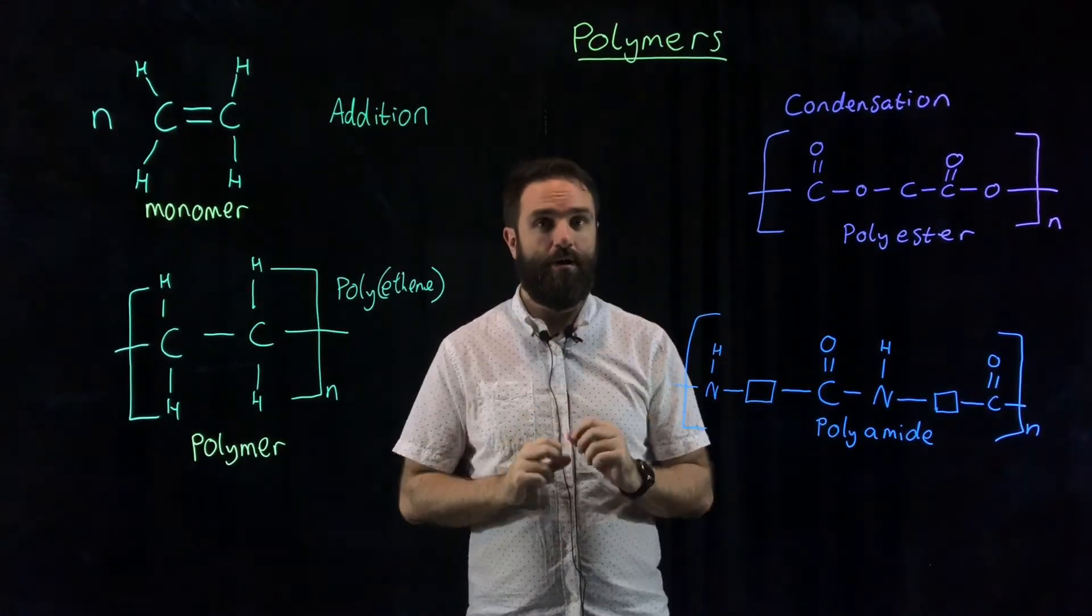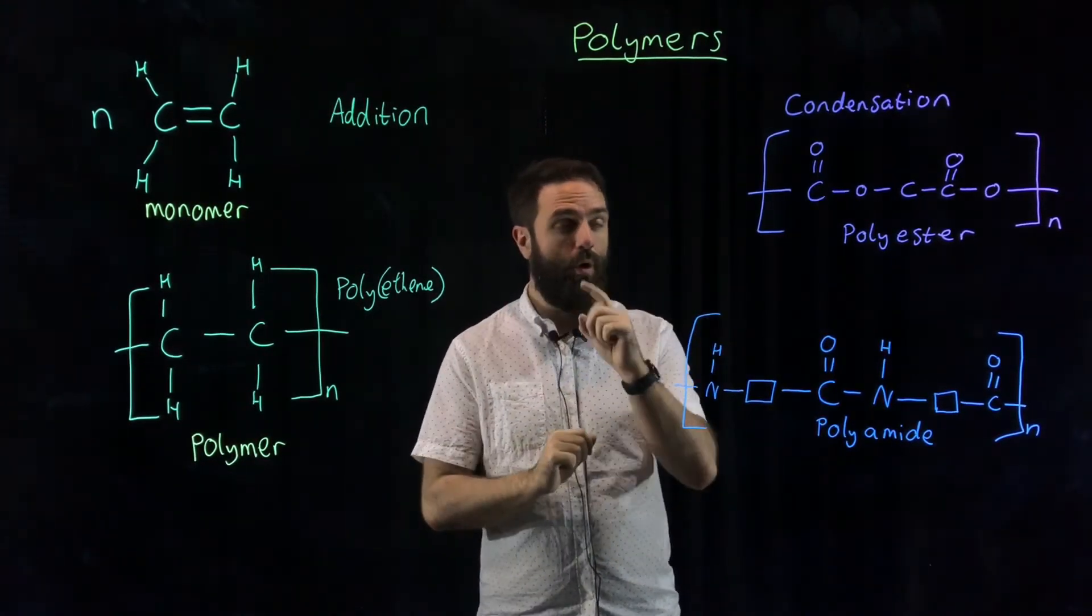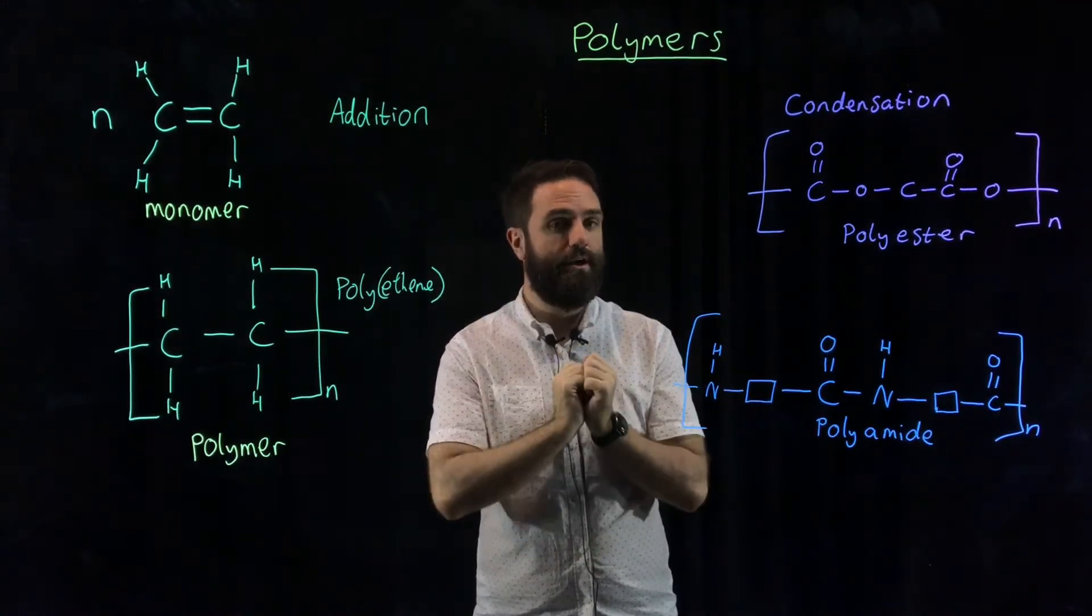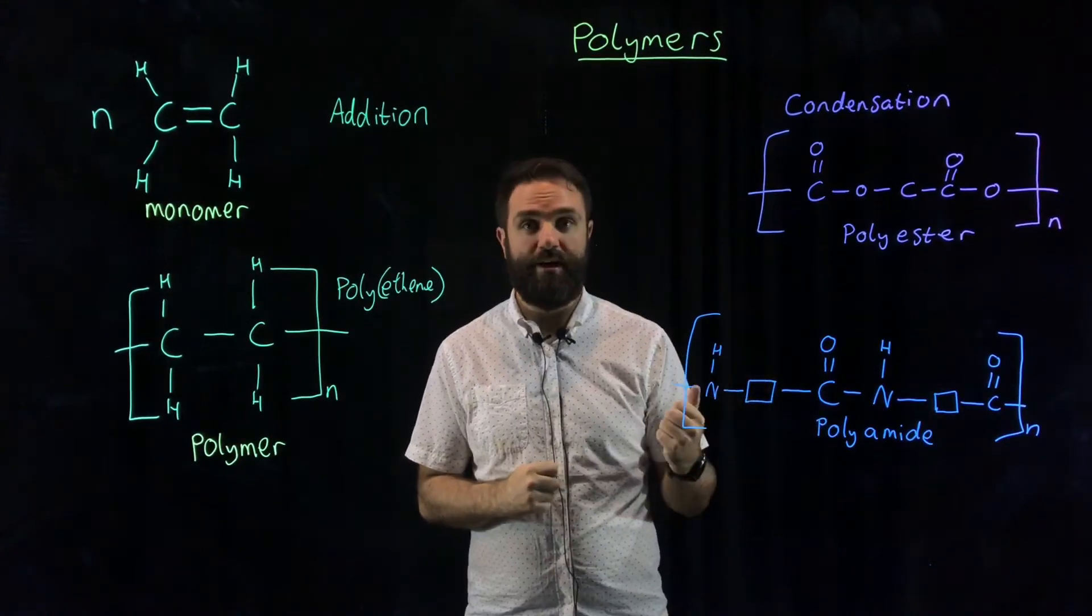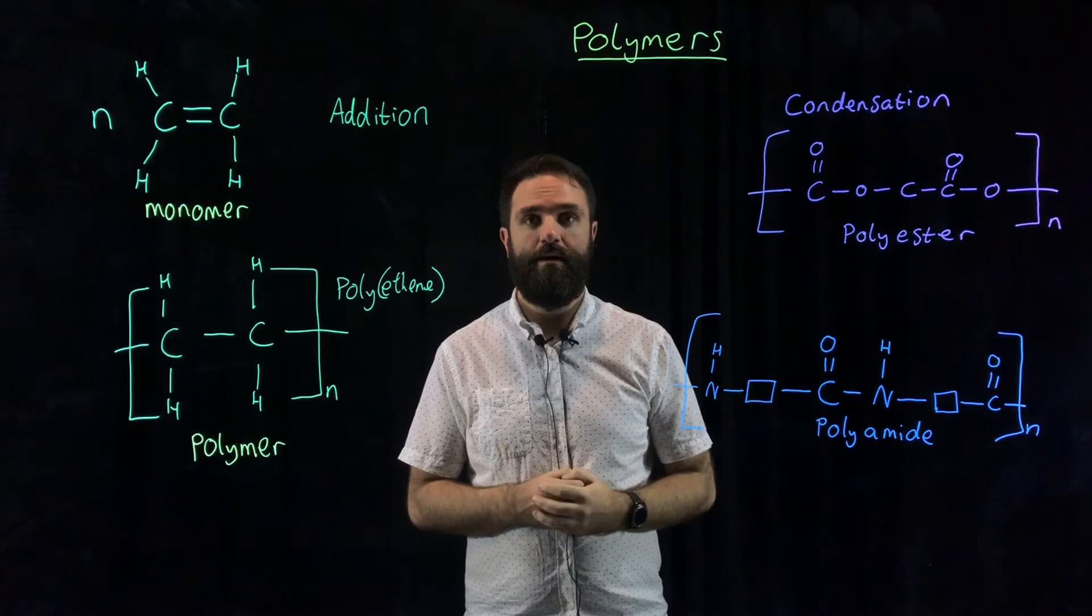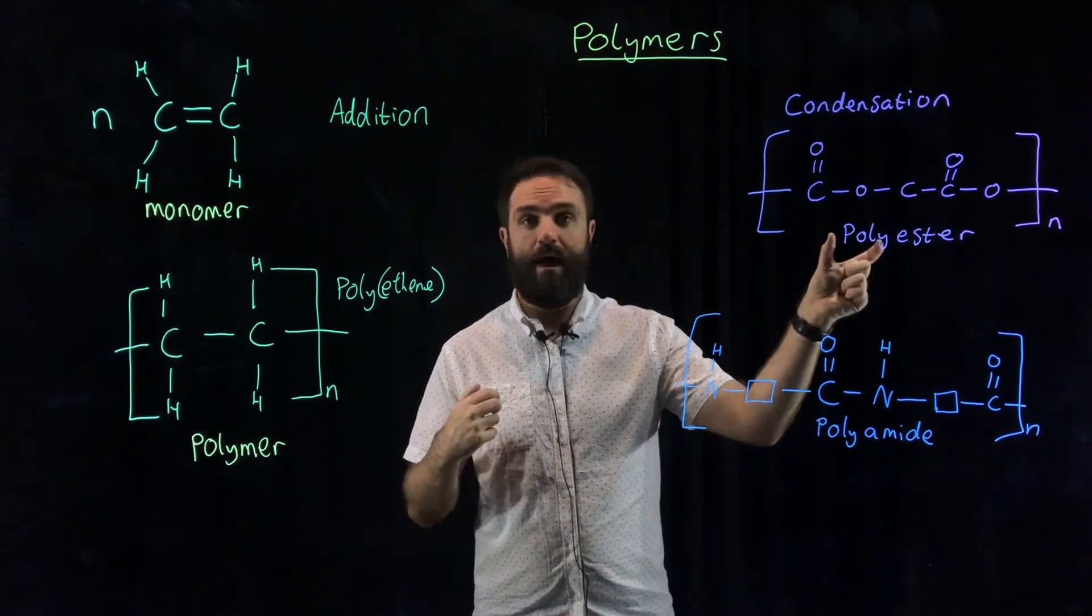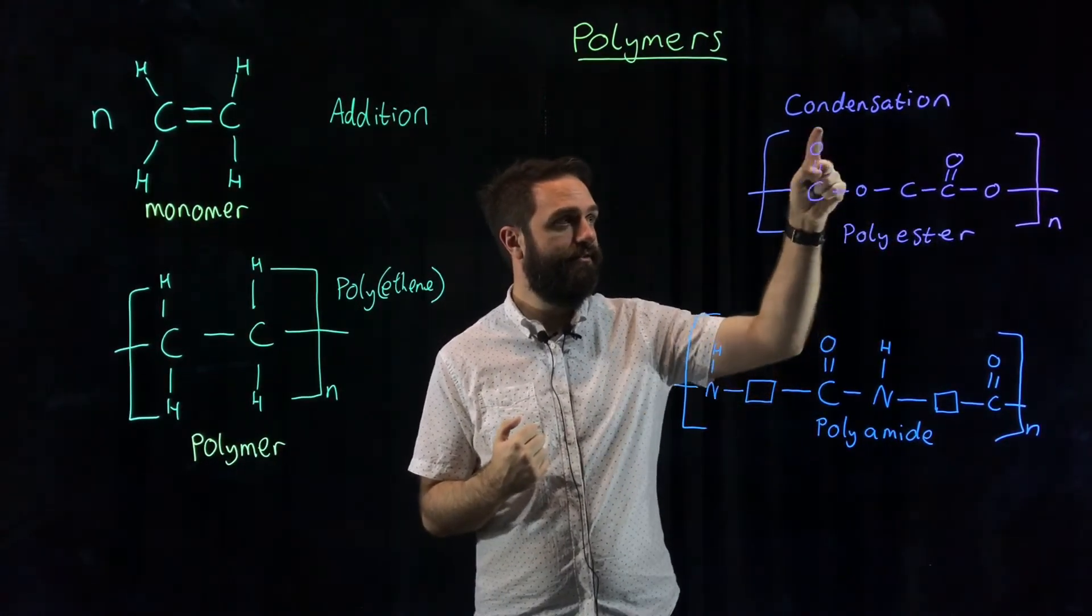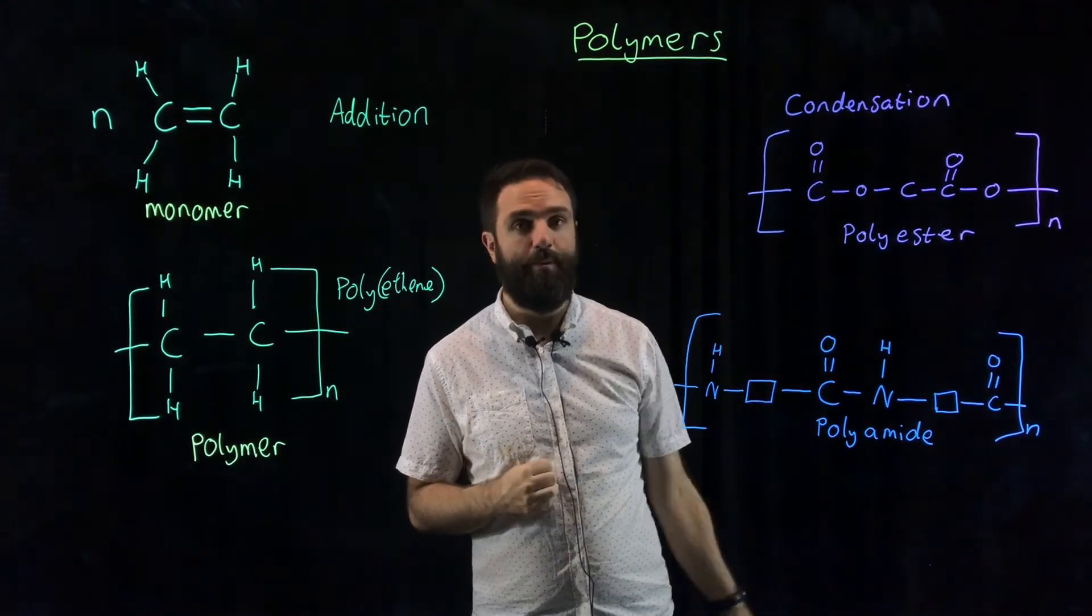So if you have a di-alcohol, two alcohols, one either side, di-carboxylic acid, or you can have one monomer which has an alcohol on one side and a carboxylic acid on the other. And then through a condensation reaction you lose a molecule of water and you have exactly the same bond formed as you did in the ester video that we watched previously. This is called a polyester. Many esters, lots of ester bonds. And this is the ester bond with this characteristic O and double bonded O.